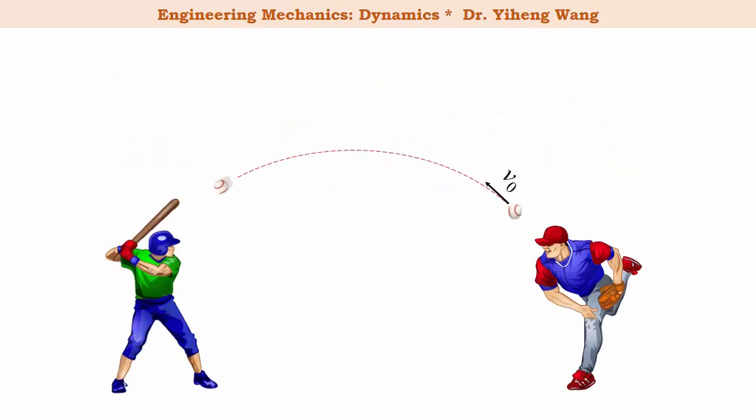The motion of a projectile refers to the free throw motion of an object that is given an initial velocity at a certain angle. Once in the air, we can assume that the object is only subjected to the gravitational force, just like in free fall motion, and therefore only experiences a constant downward acceleration of 9.81 m/s² in the SI unit system, or 32.2 ft/s² in the US customary system.